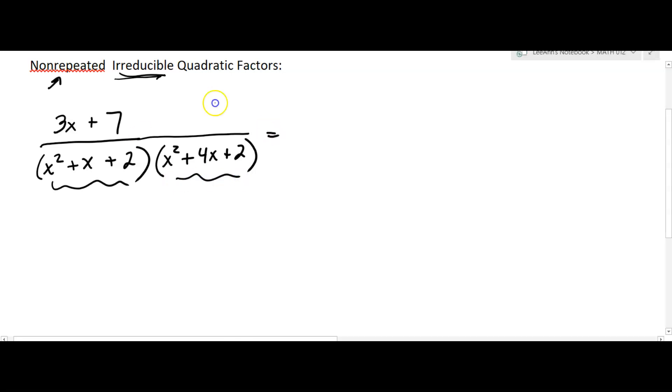So how do you set this up? We're gonna have two denominators here. One with the x squared plus x plus 2, and the other one would be x squared plus 4x plus 2.